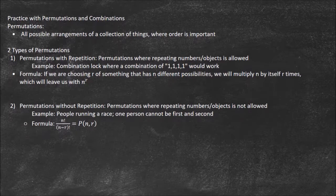The formula for that is we just do n raised to the power of r because we're choosing r of something that has n different possibilities. We're going to multiply n by itself r times.